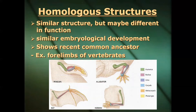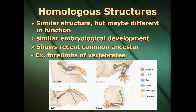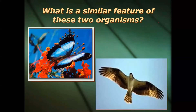Our big example here is the forelimbs of vertebrates. We have four different organisms — a penguin, an alligator, a human, and a bat — all with the same bones, but they use them differently because the habitats they started to live in were different from each other.